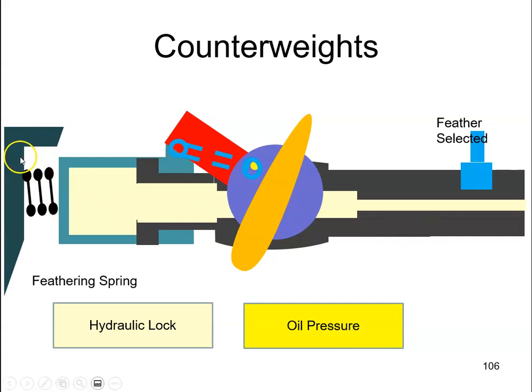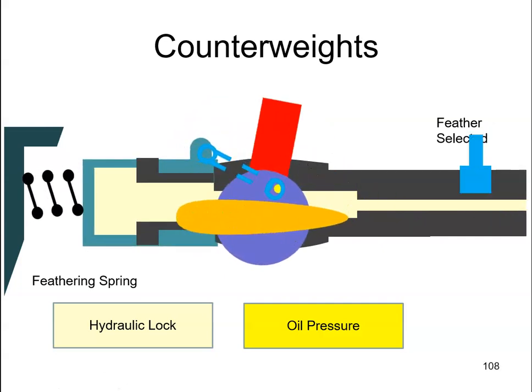Inside the propeller hub there is a feathering spring. Once the pilot valve has been lifted, there is nothing to stop the oil from being pushed back and draining back into the engine. The spring here is going to force the piston back. As it moves it is going to push this oil back into the engine. The spring forces the propeller all the way back until it hits the feathering stop here.